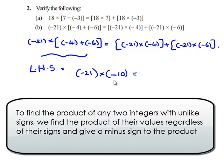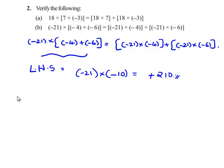To find the product of negative 21 and negative 10, first we multiply their values regardless of the signs: 21 times 10 gives 210. When we multiply values having two similar signs we always get a positive result, therefore negative 21 multiplied by negative 10 gives positive 210.